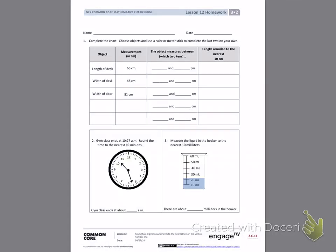This is lesson 12 homework. Today's objective was to round two-digit measurements to the nearest ten on a vertical number line.